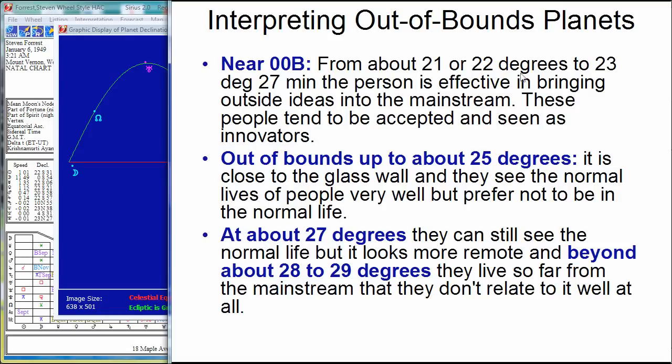The near out of bounds planets are effective in bringing outside ideas into the mainstream. These people tend to be accepted by the mainstream. A little bit weird, they're out there on the edges, but they're not totally weird because they're not out of bounds. So they're often seen as innovators. They're not seen as being threatening or being out of touch.